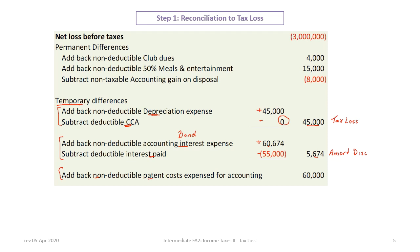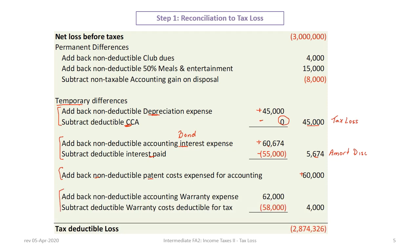Next, non-deductible patent costs: in 2020 the entire one hundred thousand was taken for tax purposes. Now sixty thousand is reversing, so we add back the non-deductible patent costs that were deducted for tax purposes in 2020. Finally, for the warranty, we add back non-deductible warranty expense based on estimates — the government won't let you deduct estimates — then subtract actual warranty costs incurred of fifty-eight thousand, resulting in a net add-back of four thousand dollars. Our total tax loss is two million eight hundred seventy-four thousand three hundred and twenty-six dollars.